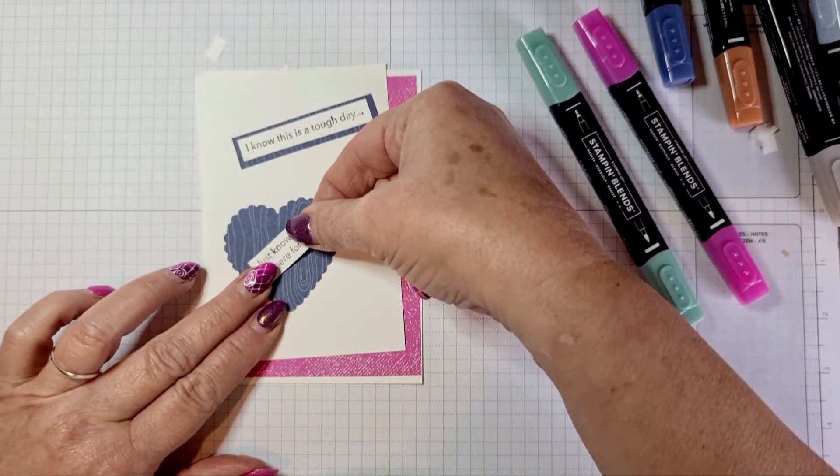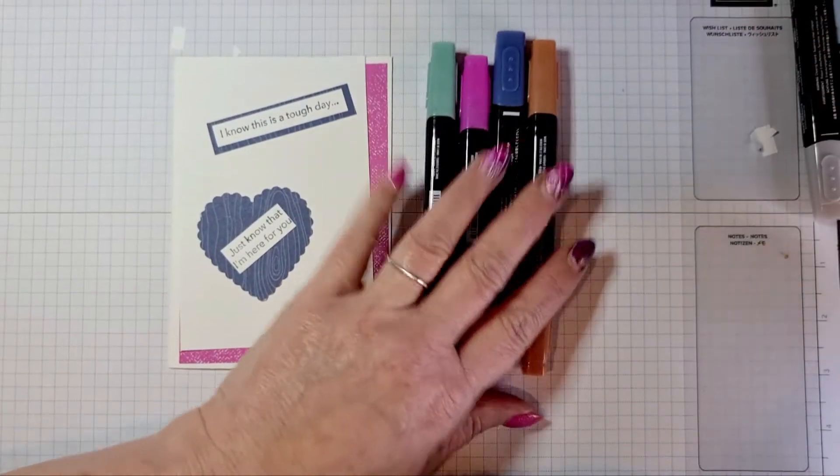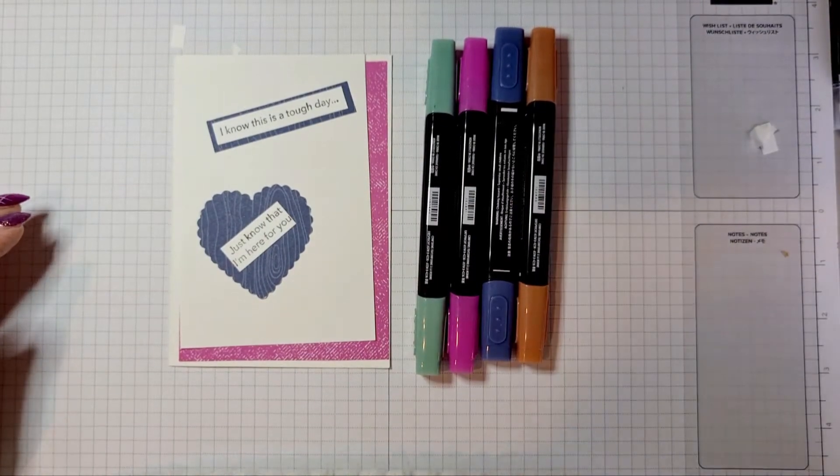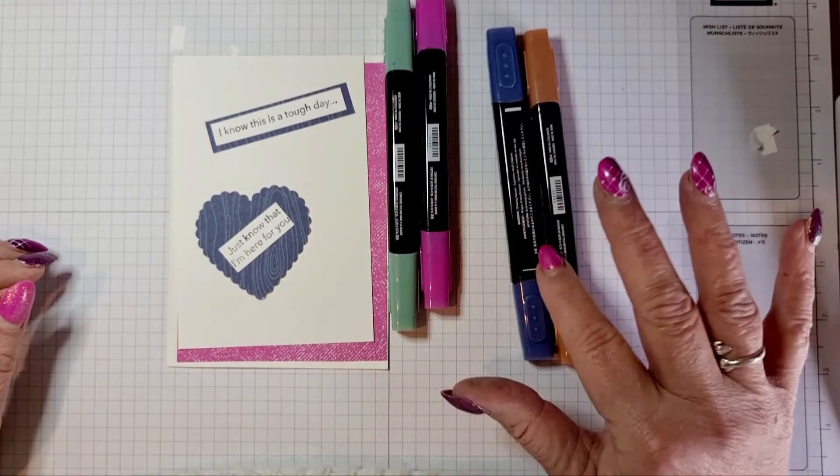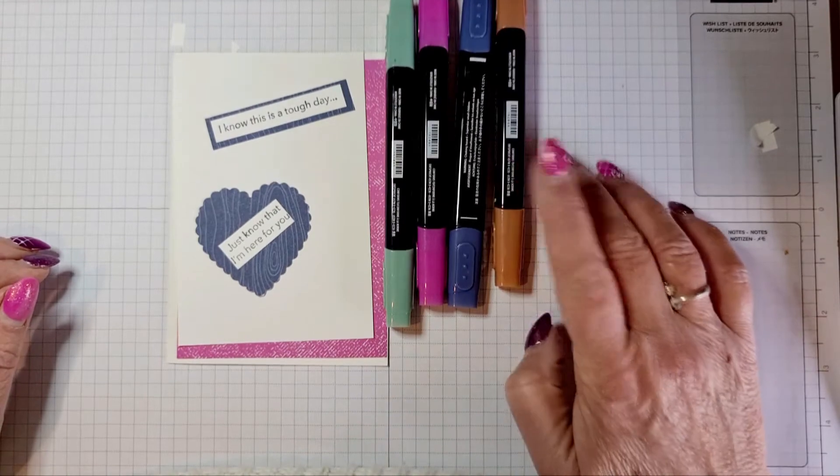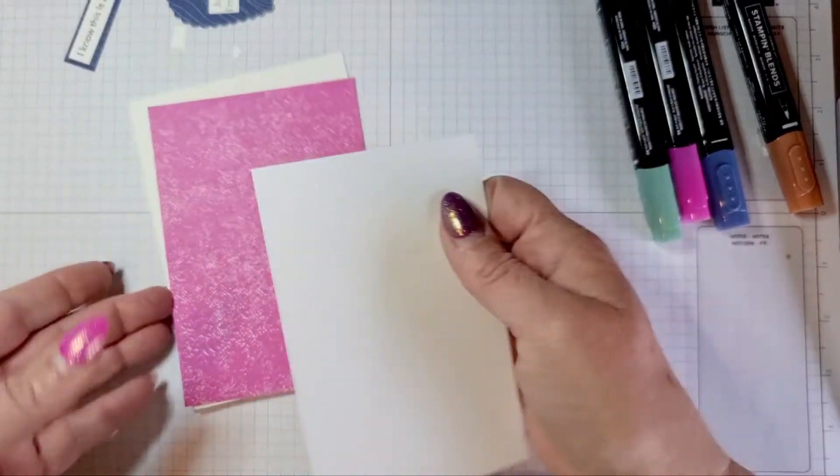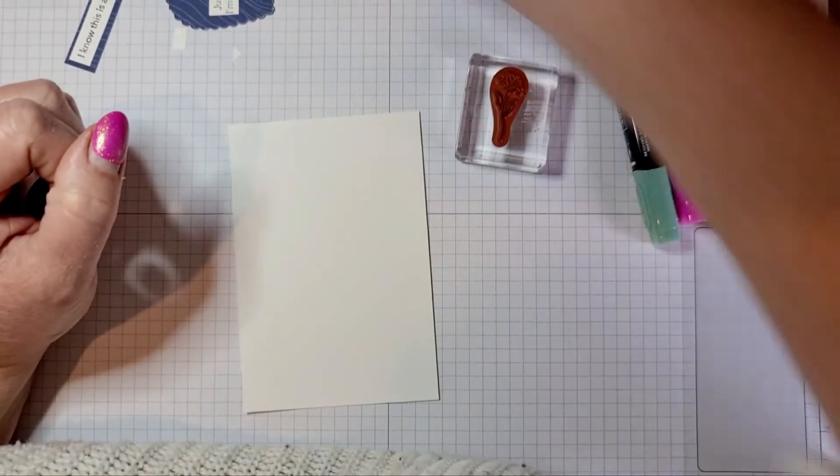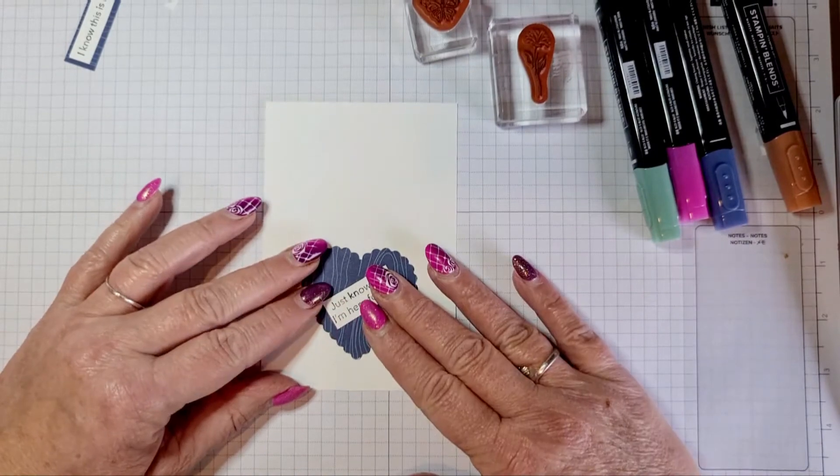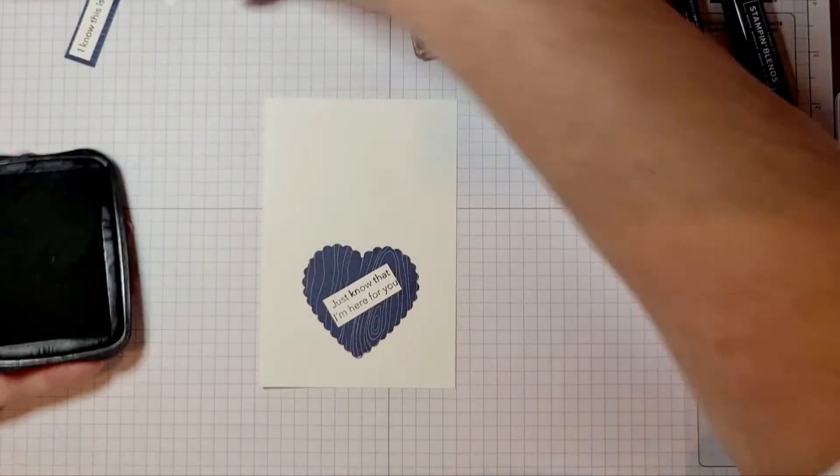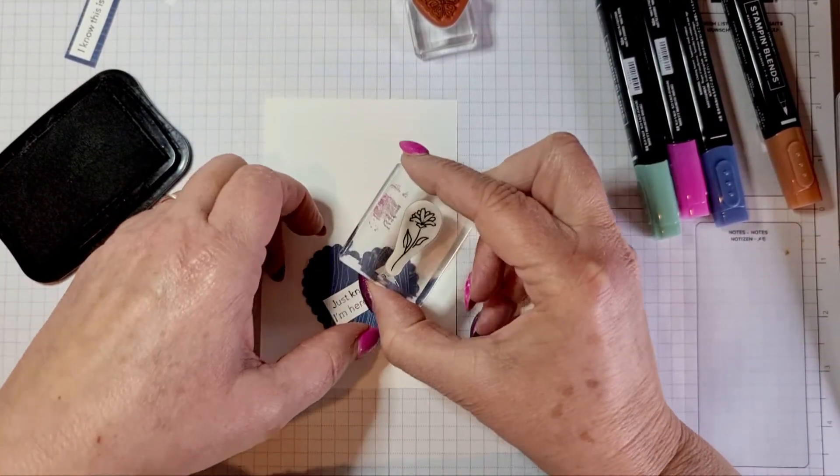The colors I need for this one are Light Just Jade, Light Magenta Madness, Light Smoky Slate, and Light Cinnamon Cider. These are all ready to go. I need my card to stamp on and the flower and the butterfly. What I did with this one is I measured it out as to where I want my flowers. I'm just measuring it as to where I want my flowers coming out like that.